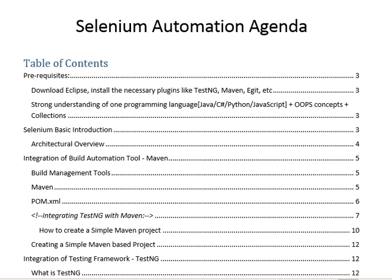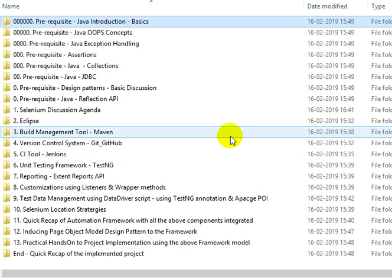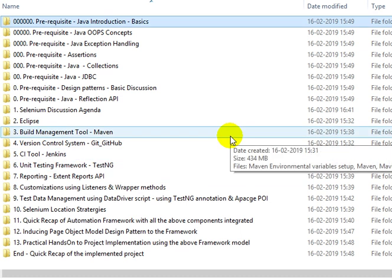We are looking at how we have distributed these concepts and contents at the directory level. This is how we have segregated the content and topics into various directory levels.